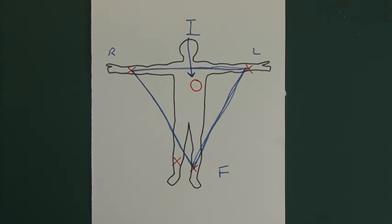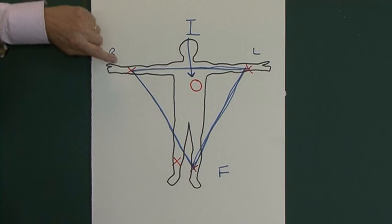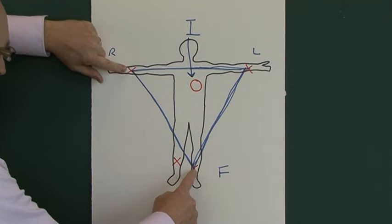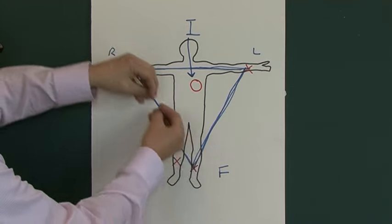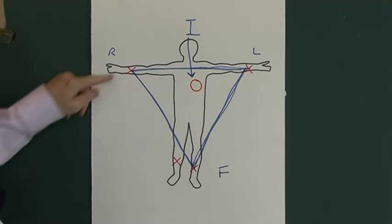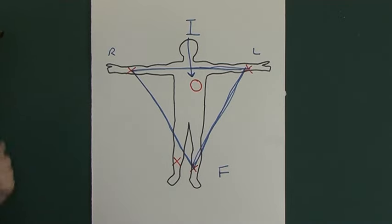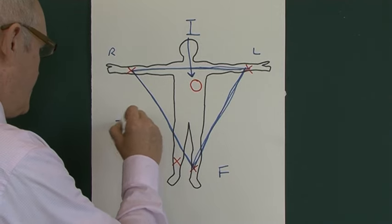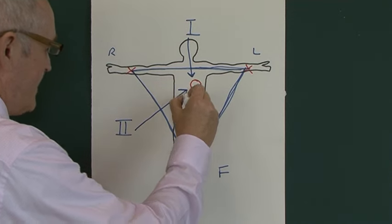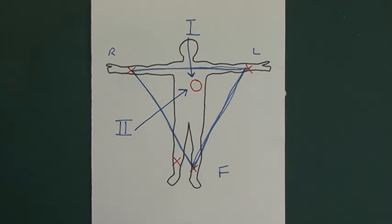Lead two is another dipolar lead. Again, this clever ECG machine is taking some of the information from the right arm and some of the information from the foot, combining that electrical information together in a clever way, and essentially giving us a view from lead two looking at the heart from a different direction. That is lead two.